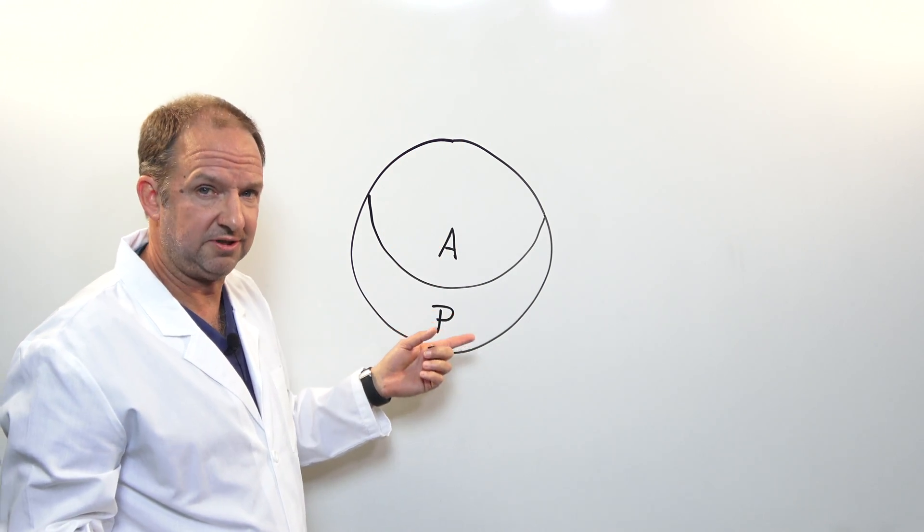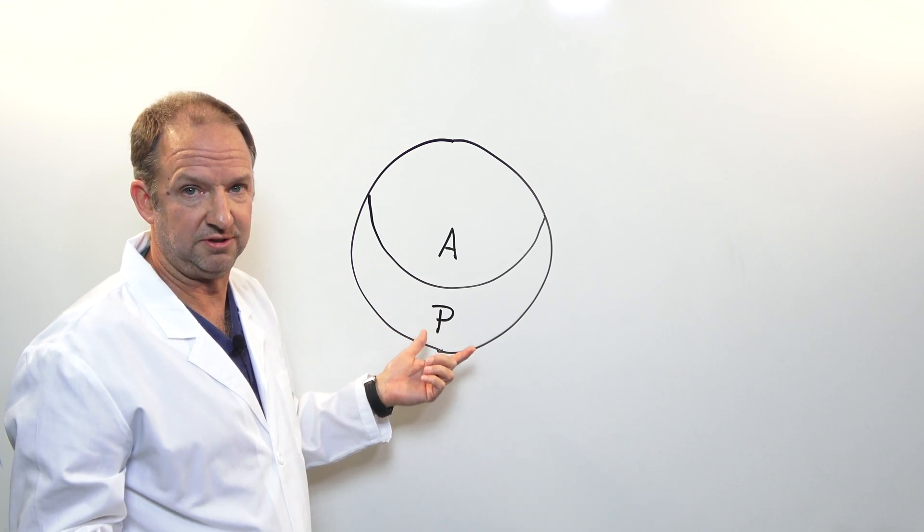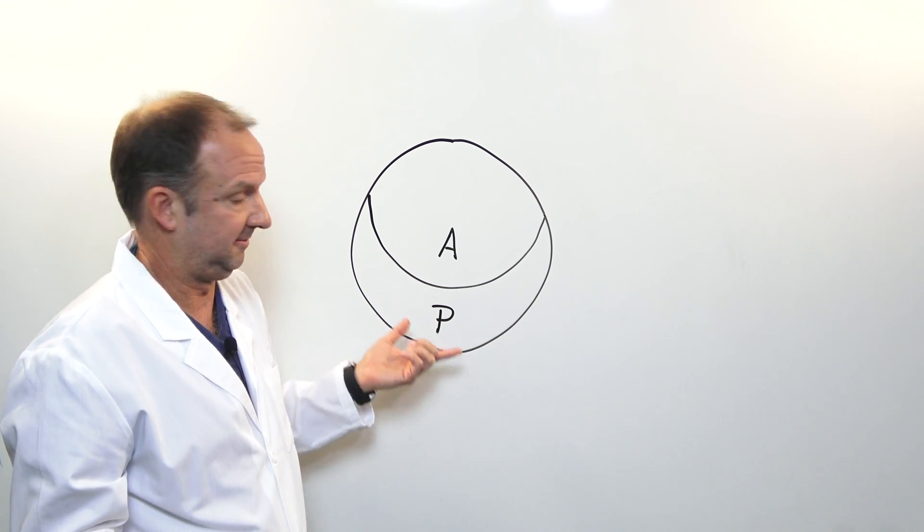And a much smaller one that's called a posterior leaflet and the reason we call it a posterior leaflet is because it faces the back of the heart. That simple.